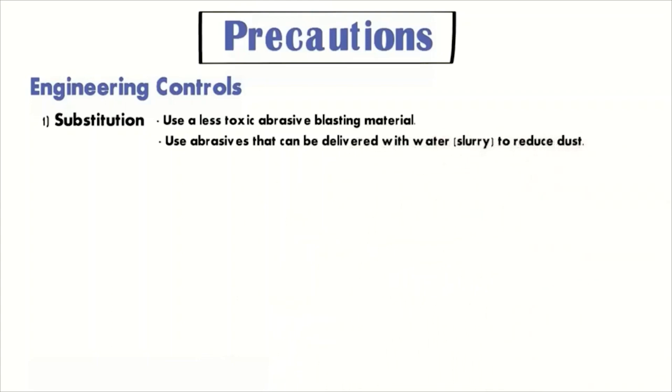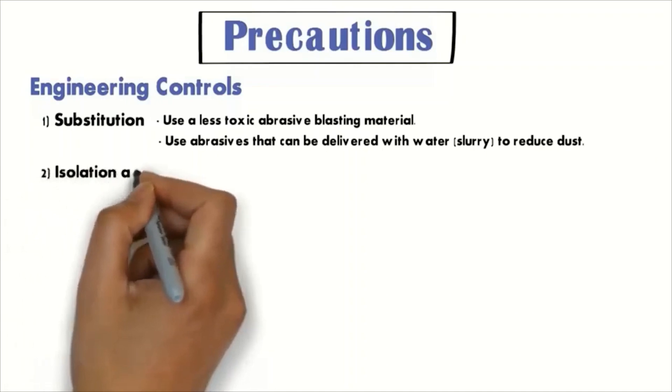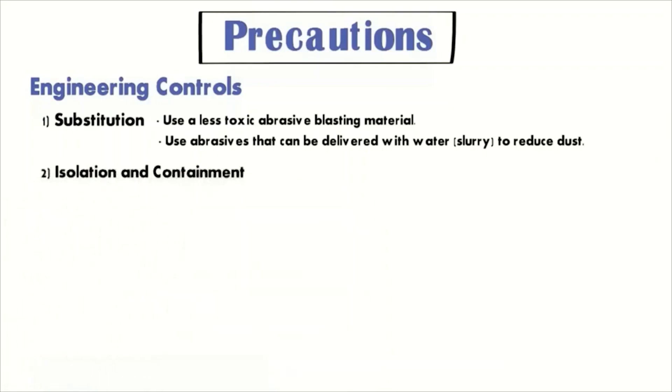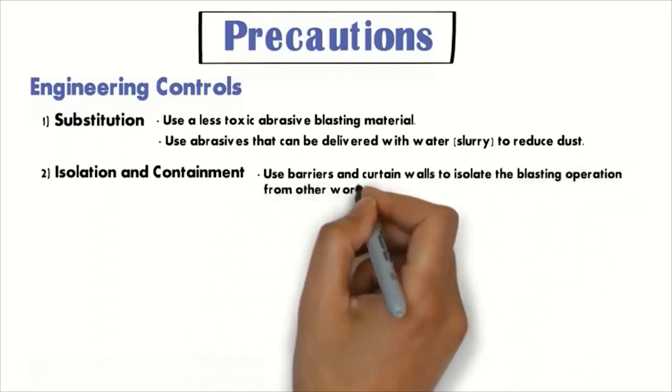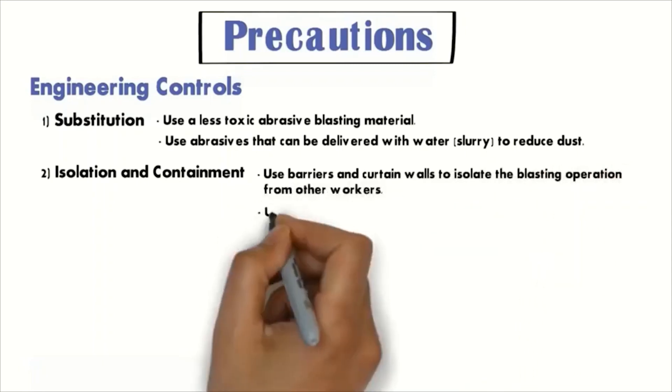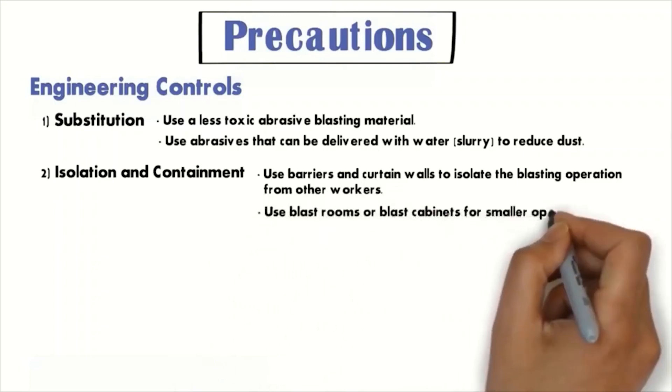Number two is isolation and containment. Use barriers and curtain walls to isolate the blasting operations from other workers. Use blast rooms or blast cabins for smaller operations. Use a restricted area for non-inclusive blasting operations. Keep co-workers away from the blasters.